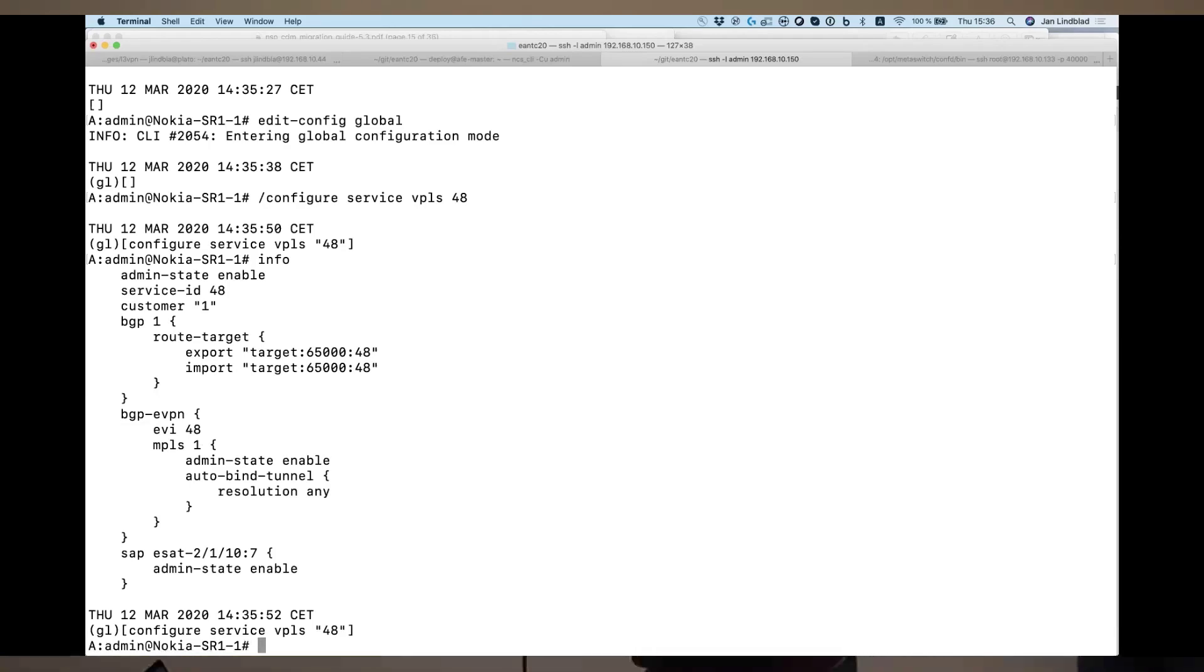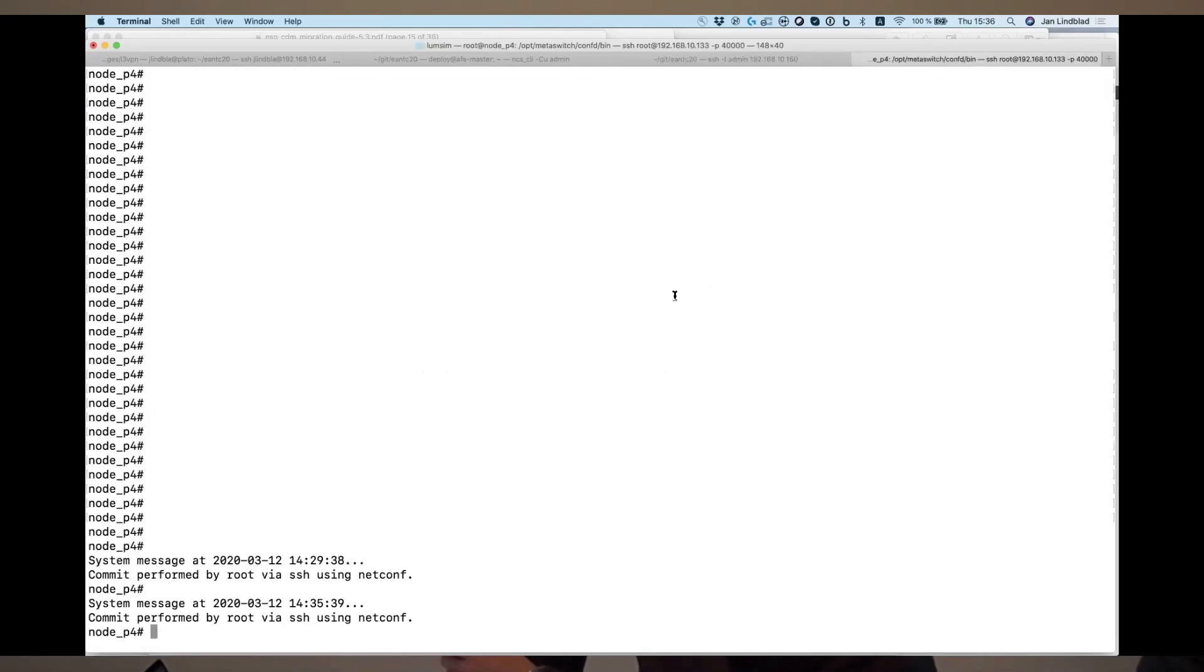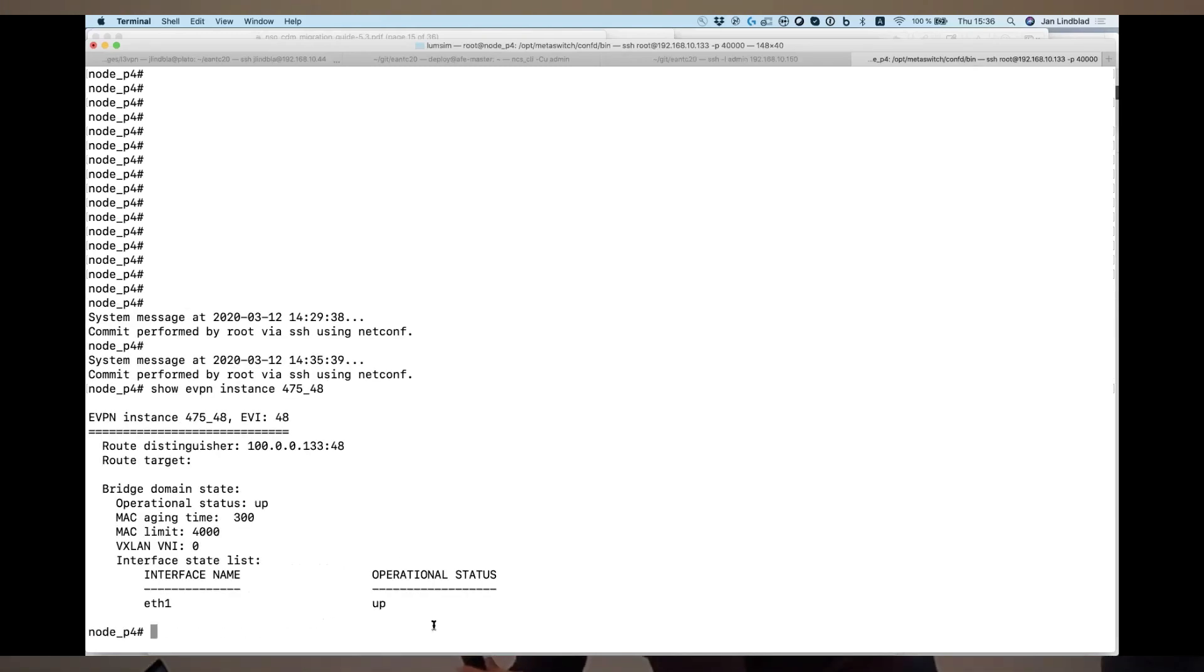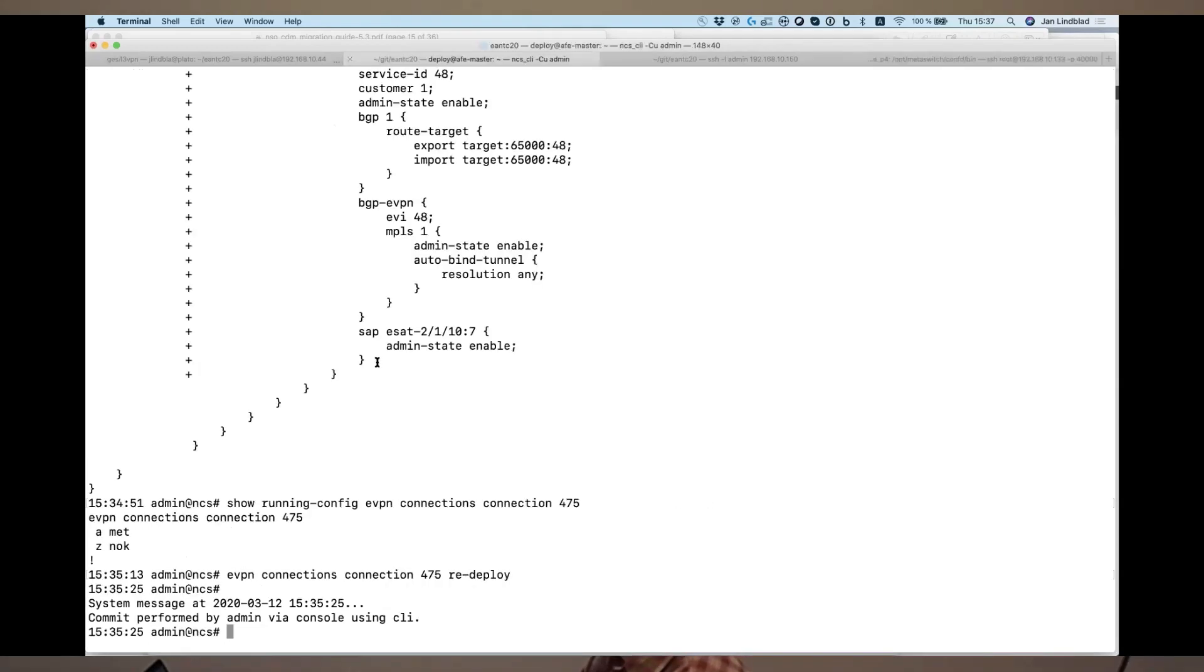Okay, so I'll now show you similar things for MetaSwitch. So, on the MetaSwitch device, you can see that we're running ConfD here. And so, we've had some configuration injected by Jan from his controller. And if I show you now this eVPN instance, it exists. We can see it's operationally up. And we can see the interface that Jan's config has bound into it as it was eth1 on our device.